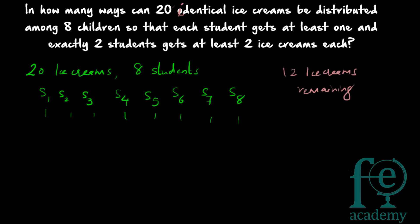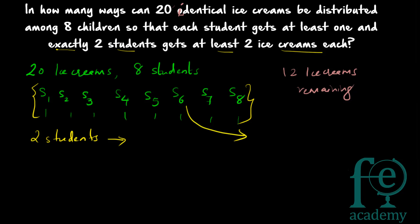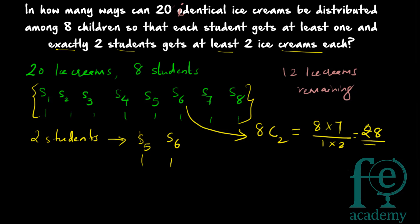The second condition is that exactly 2 students get at least 2 ice creams each. We give 1 additional ice cream to each of those 2 students. We can select any 2 students from the 8 students in 8C2 ways. 8C2 = 8 × 7 divided by 1 × 2 = 28. So there are 28 ways to select which 2 students receive the extra ice cream.